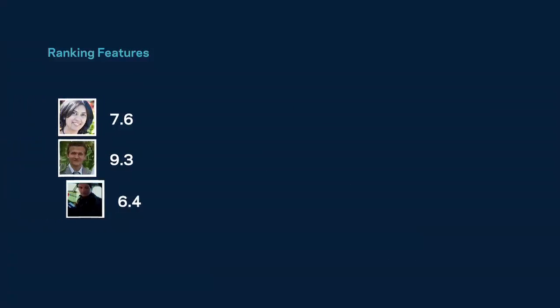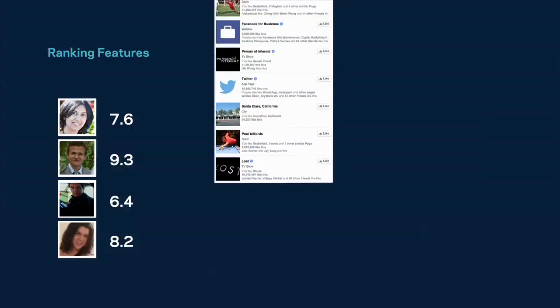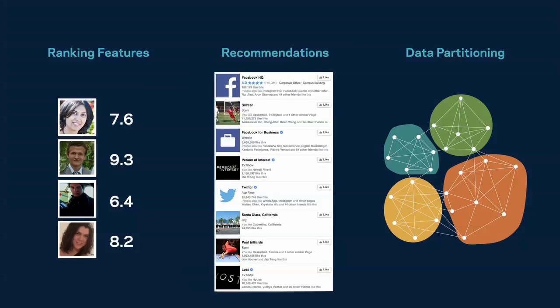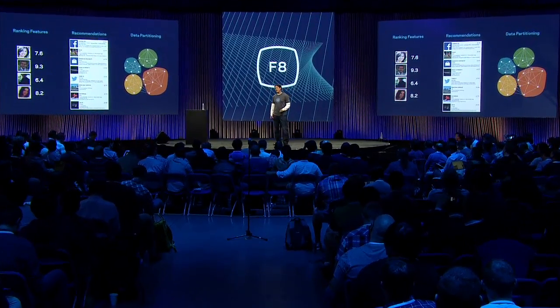I'm going to talk about three concrete use cases for graph applications at Facebook. The first is ranking features. We have lots of great products — news feed, graph search, trending topics — whose quality relies heavily on great ranking features generated through graph analytics to provide engaging and relevant content. The second use case is recommendations. A lot of people come to Facebook looking for something — pages they might like, people they might know, or groups they might want to join. We can use algorithms like collaborative filtering at large scale to provide great quality recommendations.